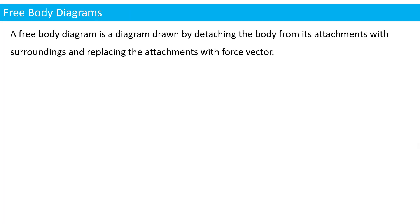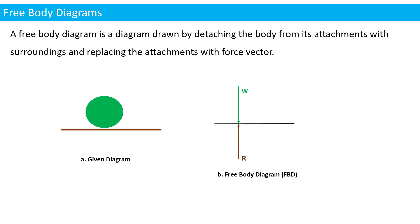A free body diagram is a diagram drawn by detaching the body from its attachments with surroundings and replacing the attachments with force vectors. For example, consider a ball resting on a floor. Everybody has its own self-weight, which always acts vertically downwards. We show the action — weight acting downward — and according to Newton's third law, for every action there is an equal and opposite reaction. The reaction always acts perpendicular to the surface at the contact point.